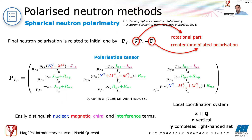Each matrix element can be individually tested. For purely nuclear scattering the polarization matrix is the identity matrix, since nuclear scattering doesn't affect neutron polarization. For purely magnetic scattering without chirality there is a minus one term, with the opposite sign in another element. Depending on sample orientation you may see only diagonal elements. With a little experience you can read the basic features of a magnetic structure just by looking at the matrix.